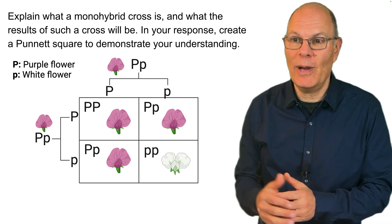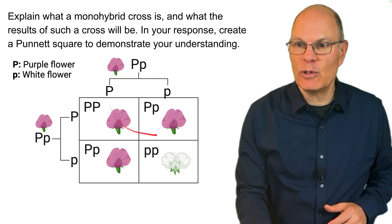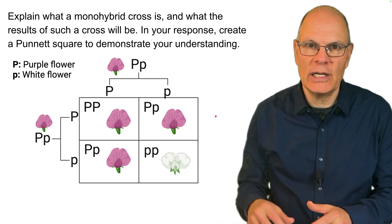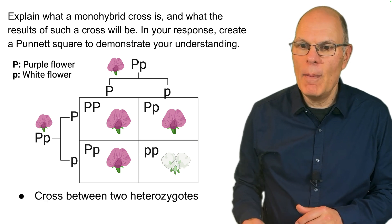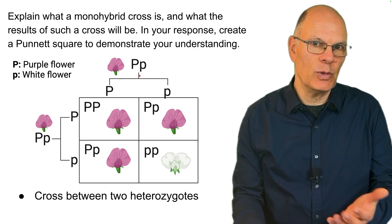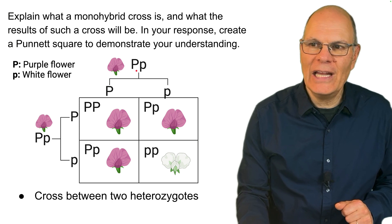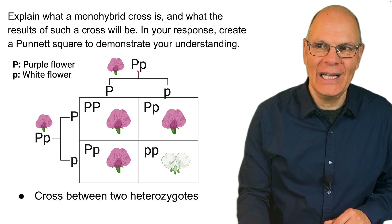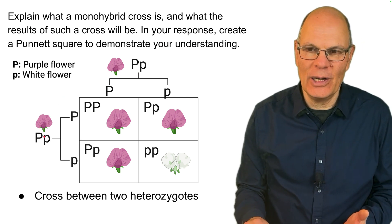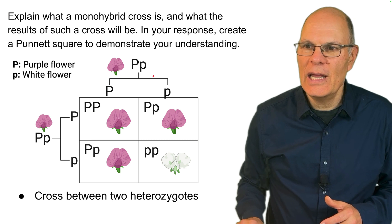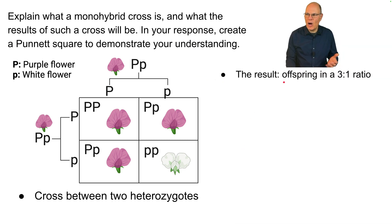Explain what a monohybrid cross is and what the results of such a cross will be. In your response, create a Punnett square to demonstrate your understanding. A Punnett square uses the rules of probability to quickly predict the offspring of genetic crosses. A monohybrid cross is a cross between two heterozygotes. Here, these are peas — one of Mendel's study organisms — with purple flowers. The genotype is capital P, lowercase p, crossed with capital P, lowercase p, because it's a heterozygote and this is a monohybrid cross: hybrid for one characteristic. The result will be offspring in a three-to-one ratio.